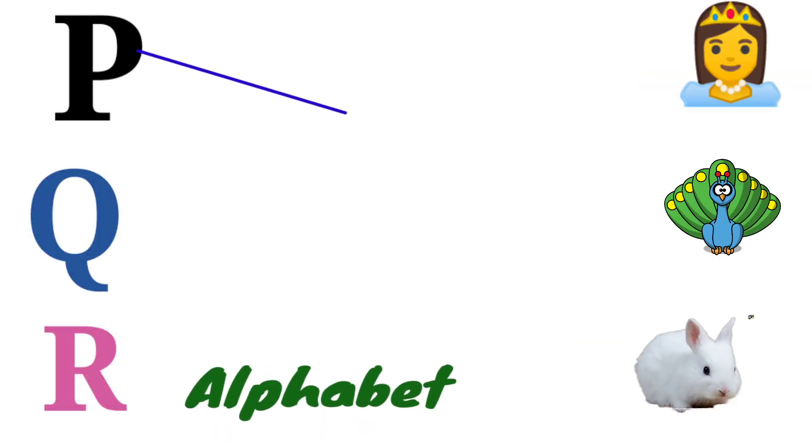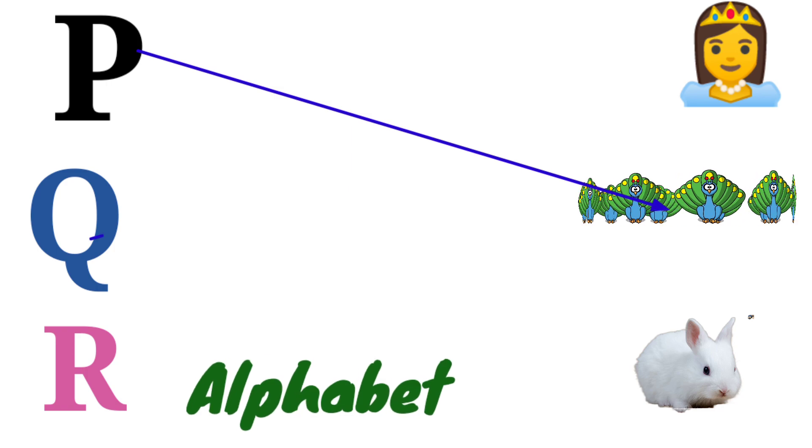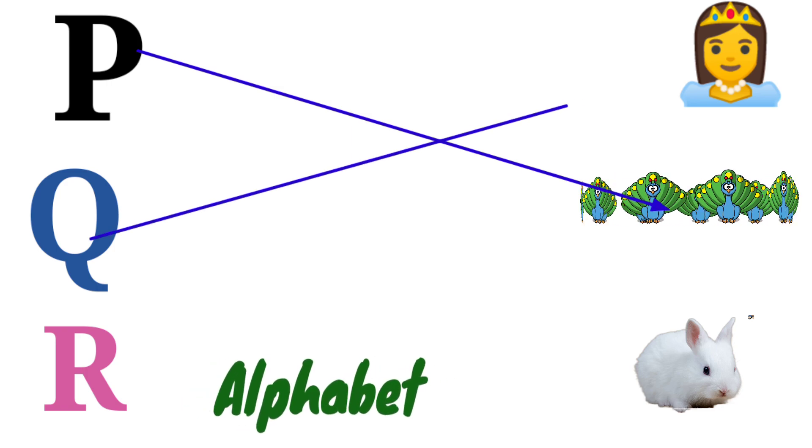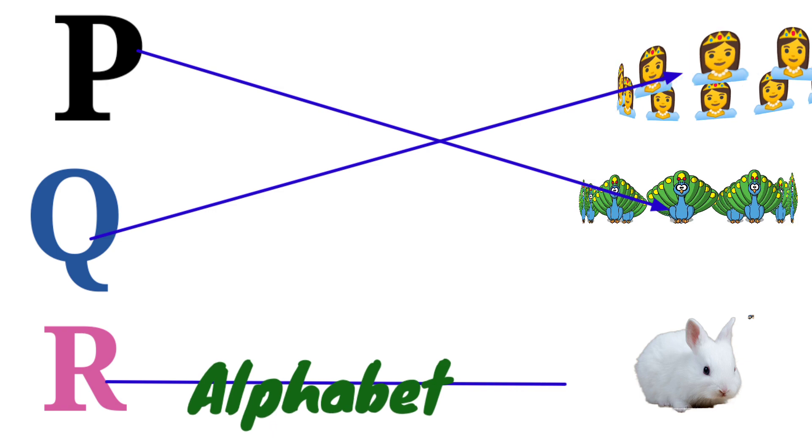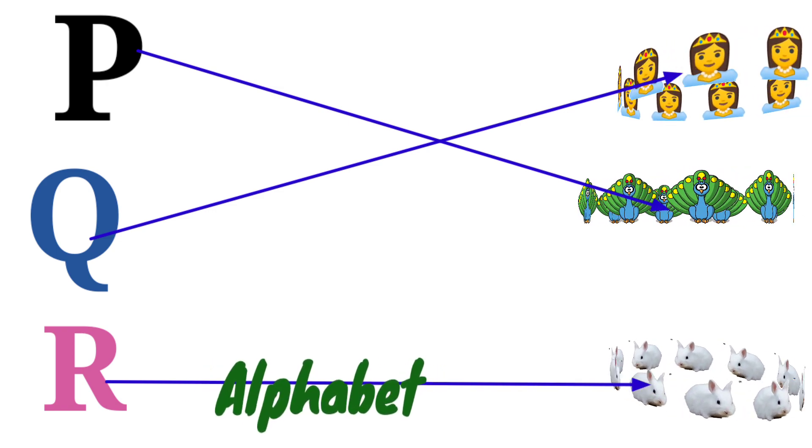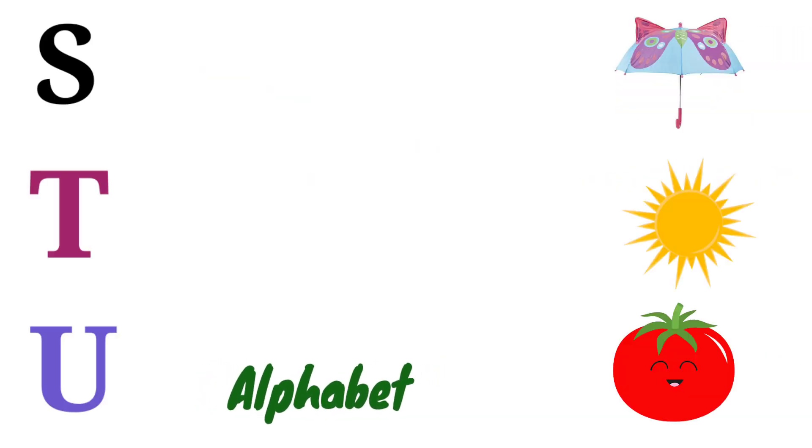P for Peacock, Q for Queen, R for Rabbit.